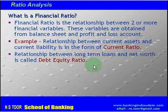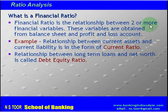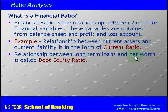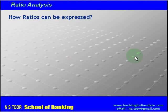Financial ratios are primarily the relationships between two or more financial variables — like current assets and current liabilities, or long-term loans and net worth. These relationships are called financial ratios, and the variables are available from the balance sheet or from the profit and loss account.